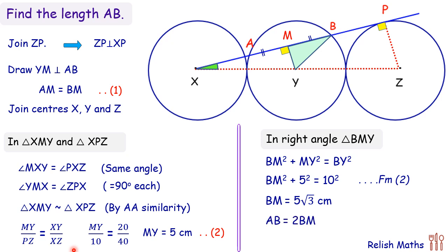And we know AB, we have to find AB, which is twice of BM, or here we can say AB is 10 root 3 centimeters, and that's what we had to find.